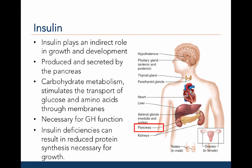So far, all of the hormones discussed have had a direct impact on growth and maturation. Insulin, on the other hand, has an indirect role in growth. Insulin is produced by the pancreas and is critical for carbohydrate metabolism, stimulating the transport of glucose and amino acids through membranes. Insulin is also necessary for growth hormone function, and insulin deficiencies can cause a decrease in protein synthesis.